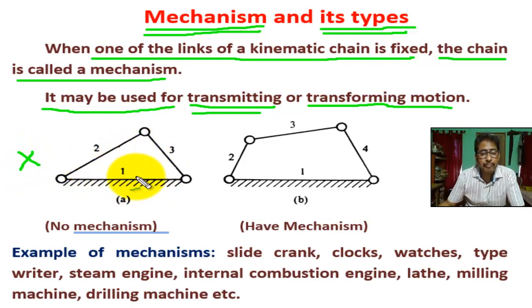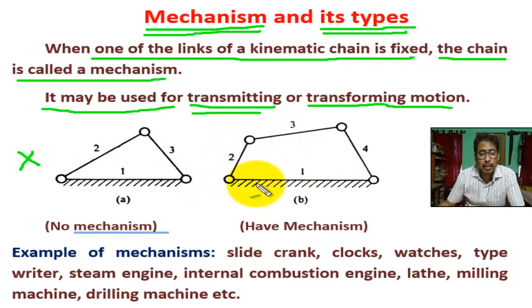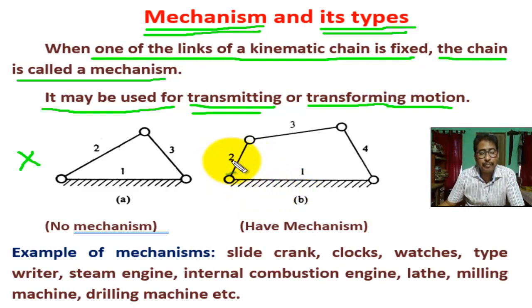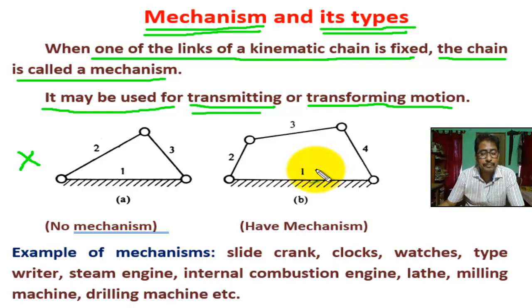It is a four-bar chain — four links, each connected by a kinematic pair of the revolute type, meaning turning type. Every link has relative motion with respect to others, so it is known as a four-bar mechanism.